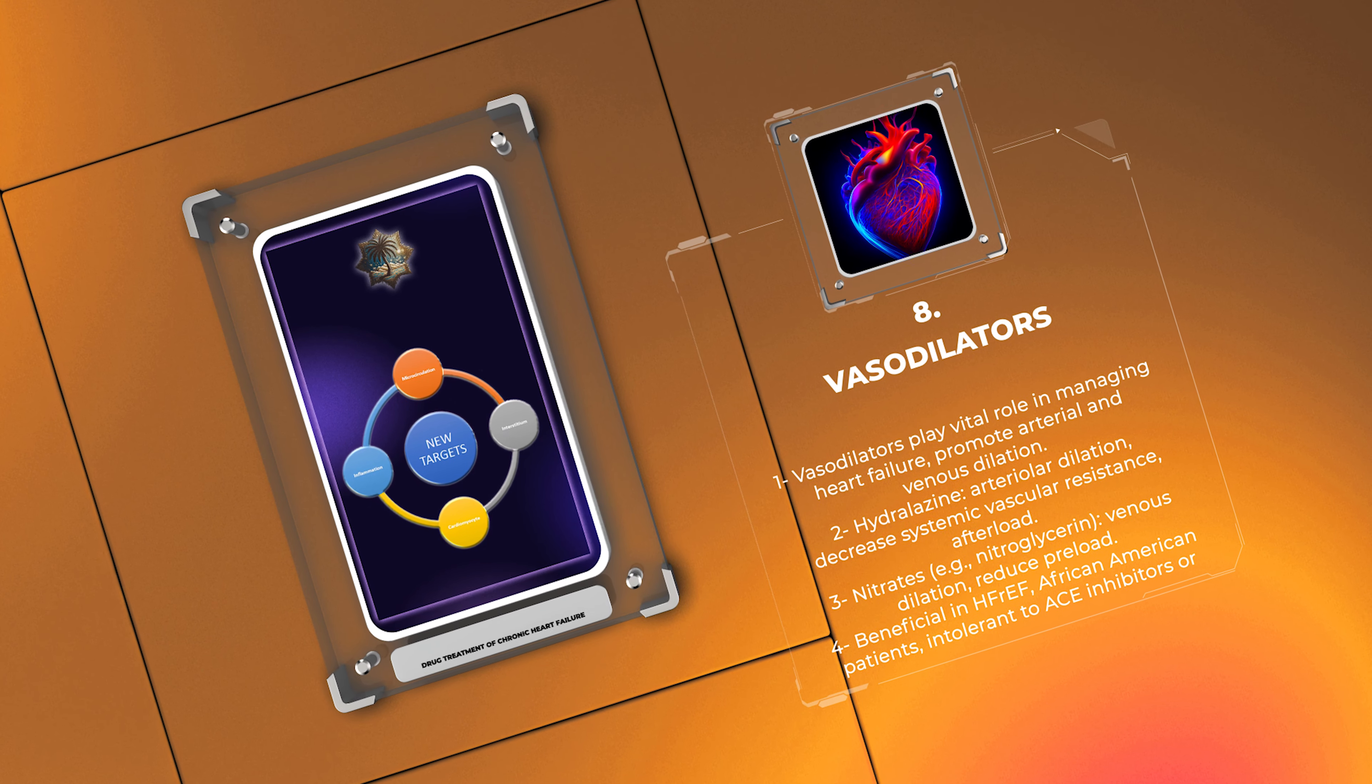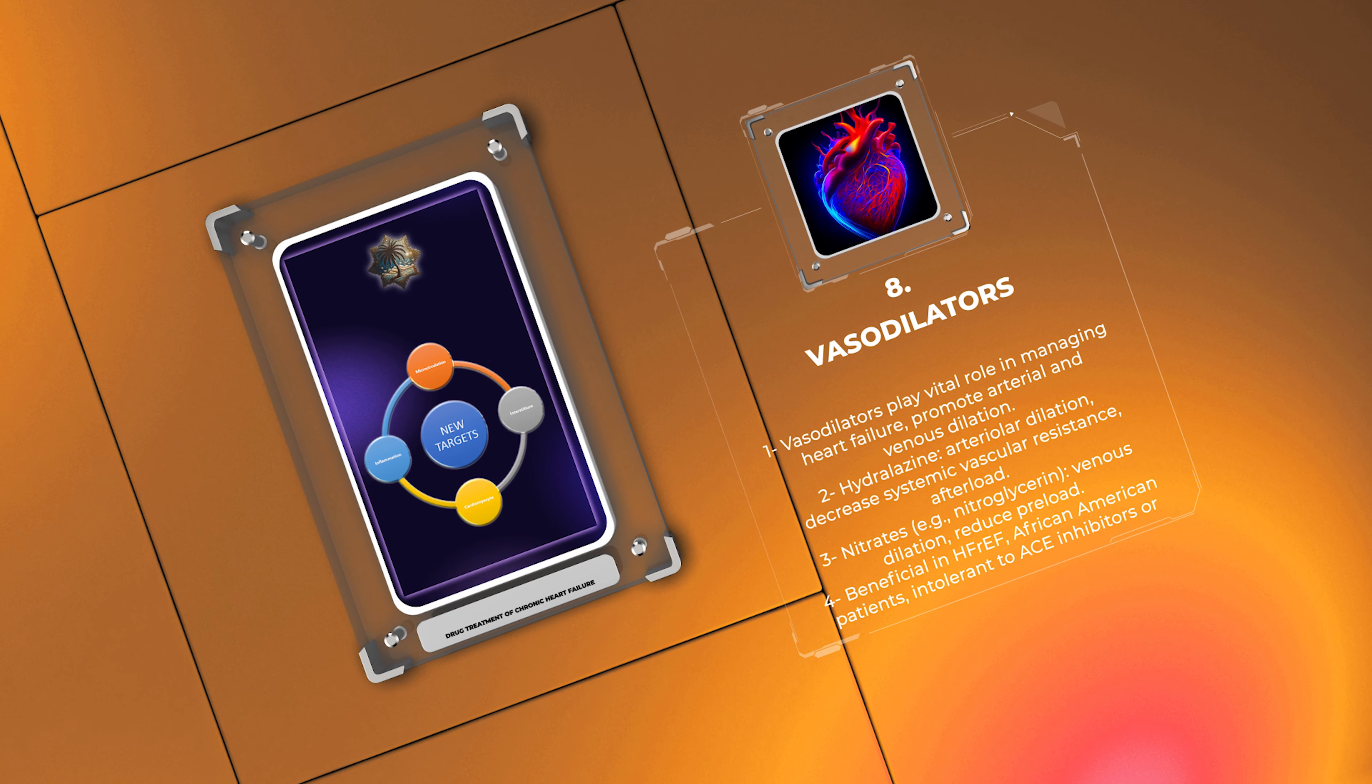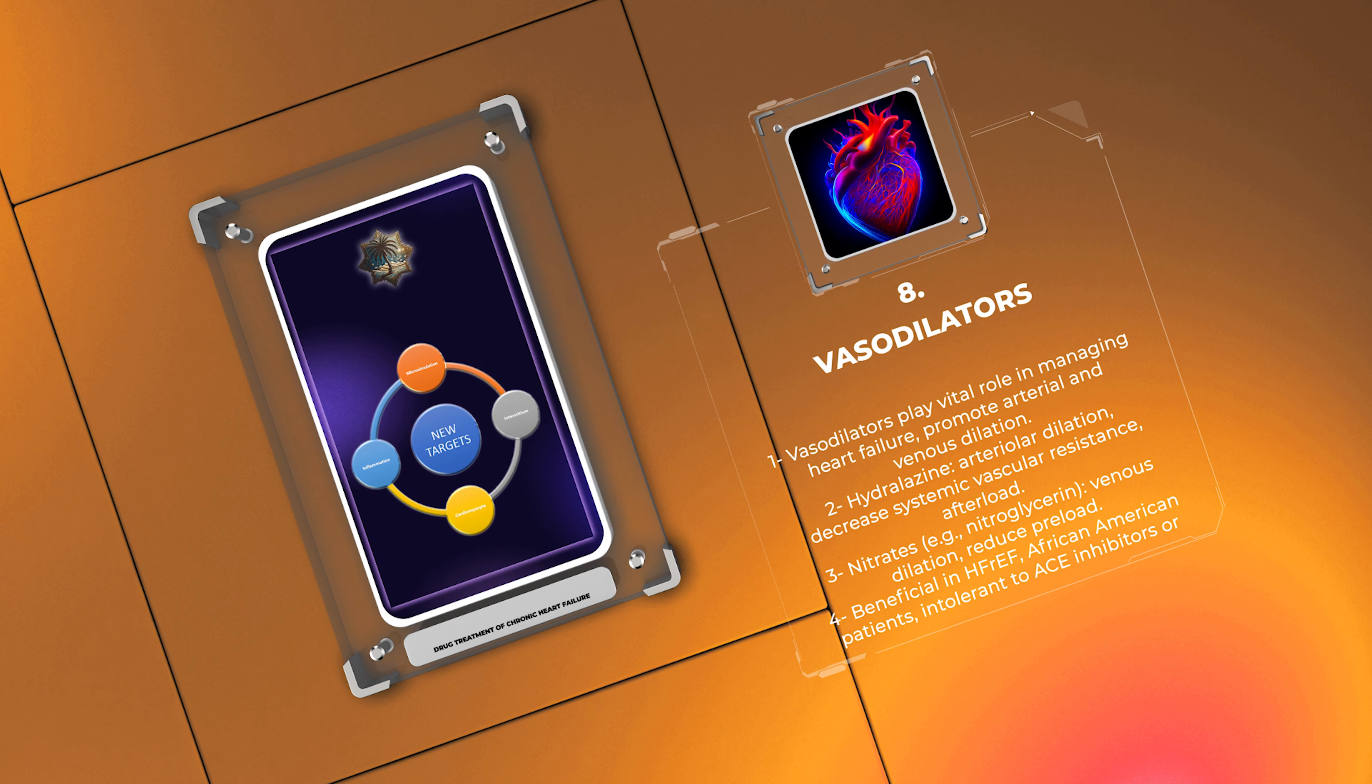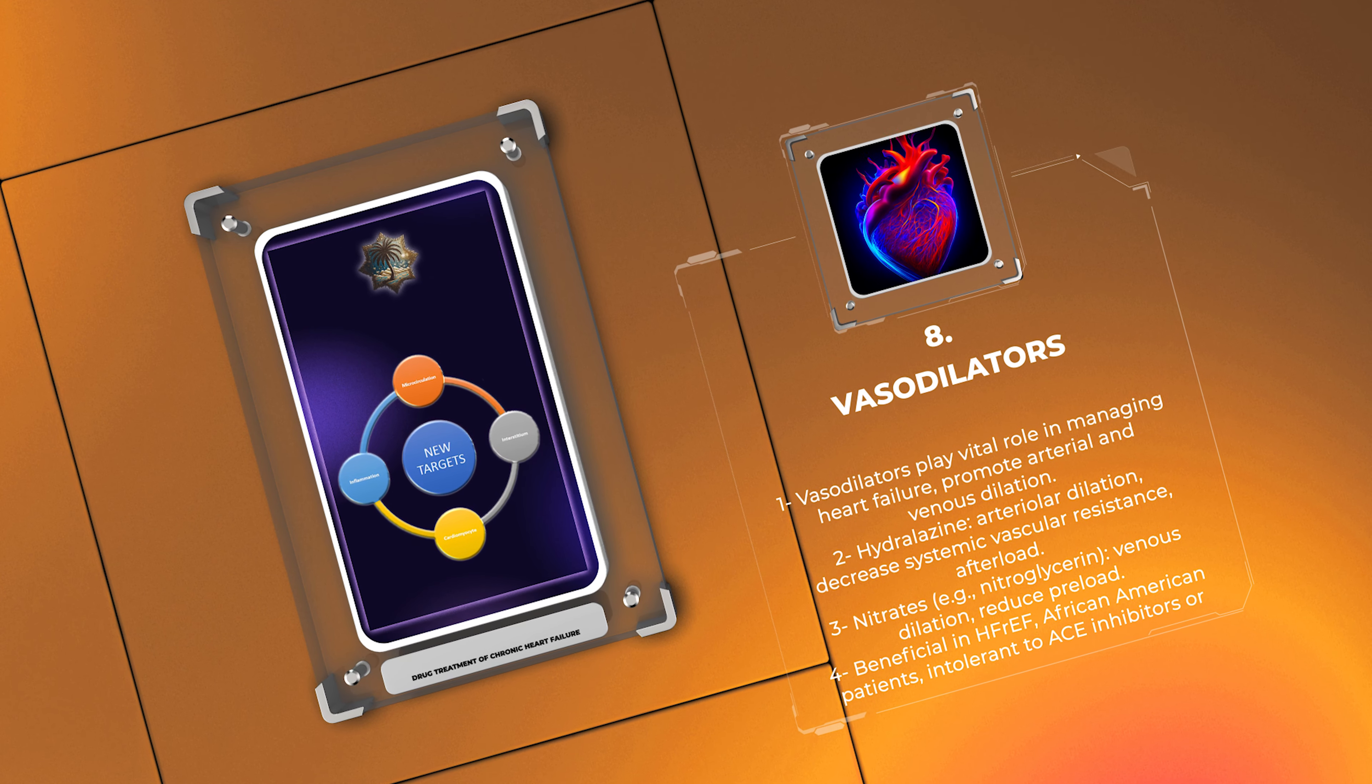Hydralazine acts directly on vascular smooth muscle, causing arteriolar dilation. This decreases systemic vascular resistance and afterload, promoting improved cardiac function. Nitrates, such as nitroglycerin, promote venous dilation and reduce preload, further relieving symptoms.